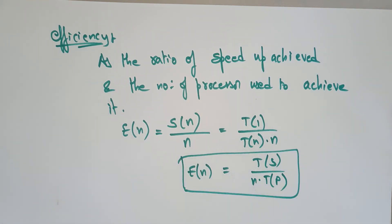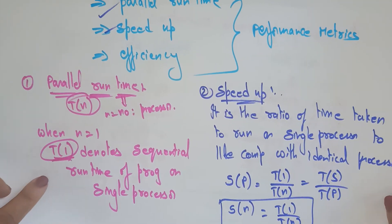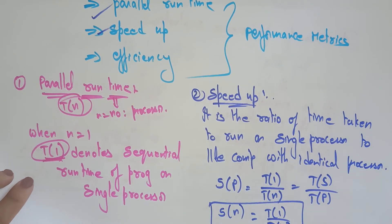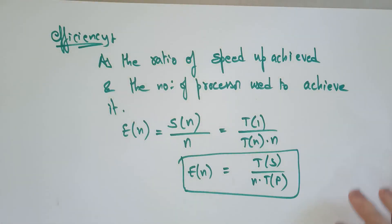These are the basic performance evaluations. I think you understand what the basic performance evaluations are and how to calculate parallel run time, speed up, and efficiency. We will use these formulas in calculating Amdahl's Law. Thank you.